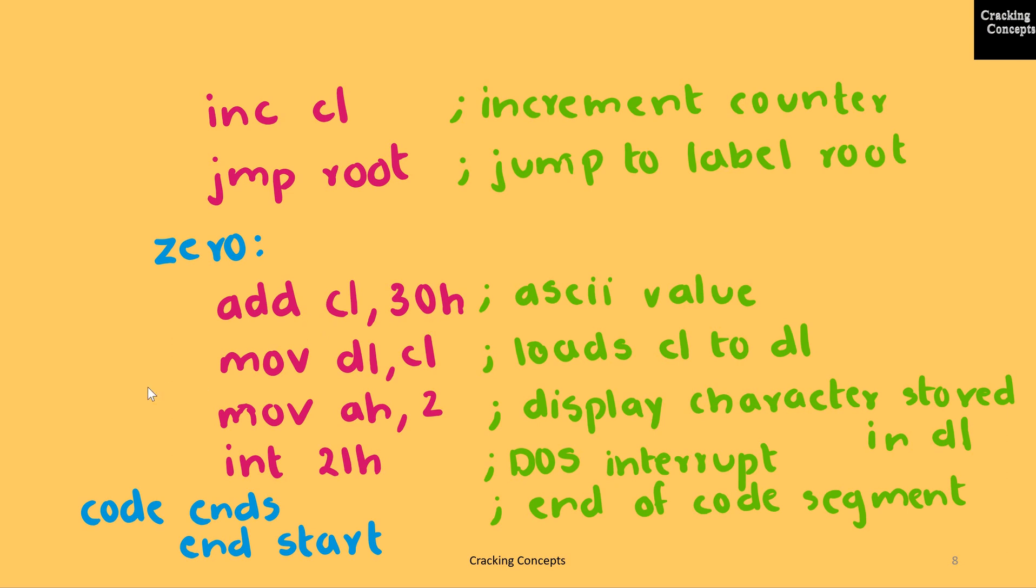Then I'll be using the 21h interrupt in order to display the result. For this, first I need to store the value to be displayed in the register DL. Then I'll move the function code 2 to the register AH, which means it should display the character that is stored in the register DL. Then I'll call the interrupt 21h. After this, we mark the end of the code segment, CODE ENDS, and END START.